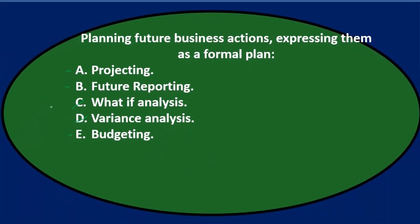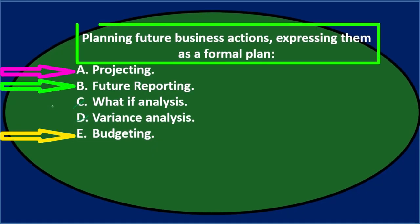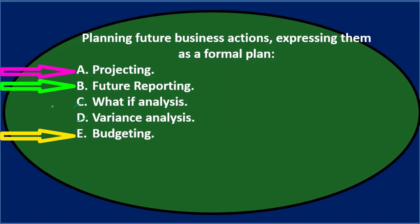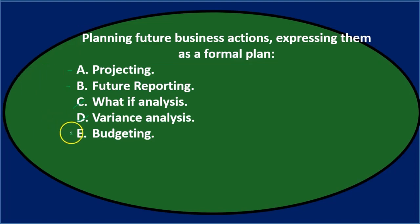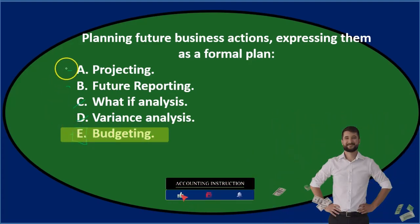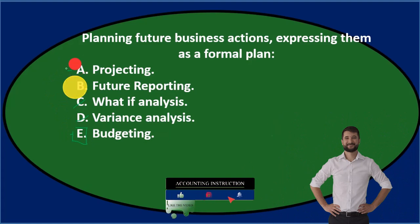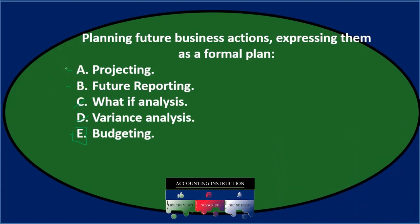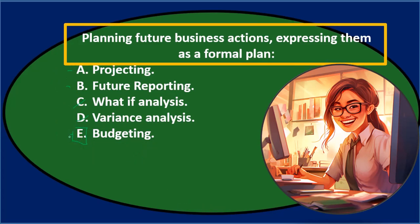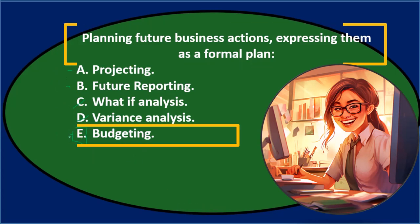So 'planning future business actions, expressing them as a formal plan' comes down to A (projecting), B (future reporting), or E (budgeting). Since we're in the budgeting area, the answer is E. You could argue A or B, but you want the formal answer. Final answer: E — budgeting.